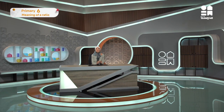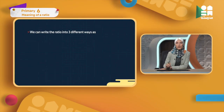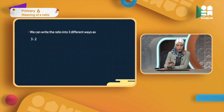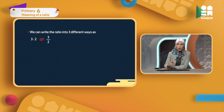We are going to learn how to write ratio. We can write the ratio in three different ways. The first way: 3 to 2, written as ratio form. The second way: as a fraction form, 3 out of 2. The third way: I can use the word 'to' — 3 to 2.